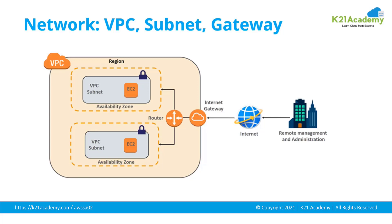Within that VPC, you have subnets, and in subnets you create machines. You also have routers and gateways. One of them is the internet gateway, which helps any machine running on the AWS cloud to connect to the internet. Outgoing connections go to the internet through this internet gateway, and any machine that wants to connect to the cloud will connect via this internet gateway if it's running on a public IP address.